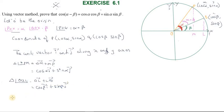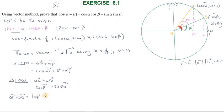Now apply the dot product formula: OP vector · OQ vector = |OP| × |OQ| × cos θ, where θ = α − β. Since OP and OQ are unit vectors, their magnitudes are both 1. So OP vector · OQ vector = 1 × 1 × cos(α − β) = cos(α − β). This is equation 1.